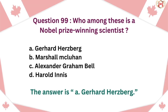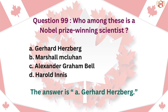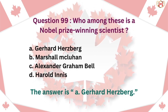Question 99: Who among these is a Nobel Prize-winning scientist? A. Gerhard Herzberg, B. Marshall McLuhan, C. Alexander Graham Bell, D. Harold Innis. The answer is A. Gerhard Herzberg.